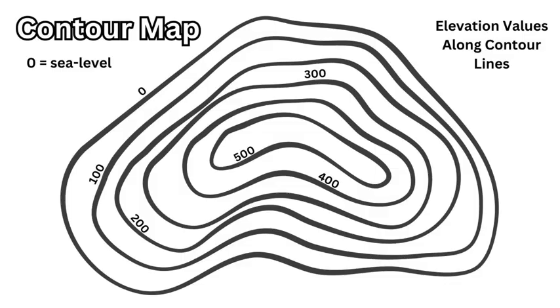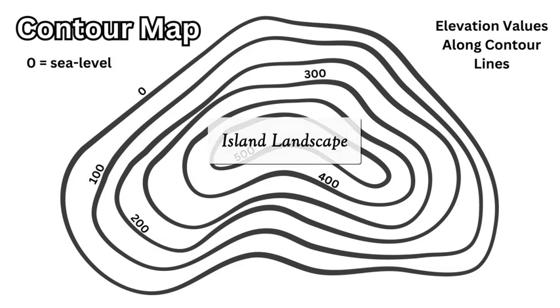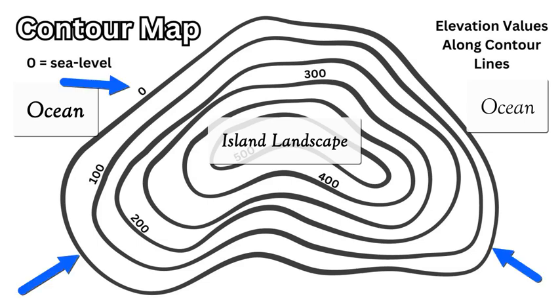Here we have a basic contour map. This is a contour map of an island with a max elevation or highest elevation of 500 feet or meters, and I know it's an island surrounded by water because of the last concentric connected loop.